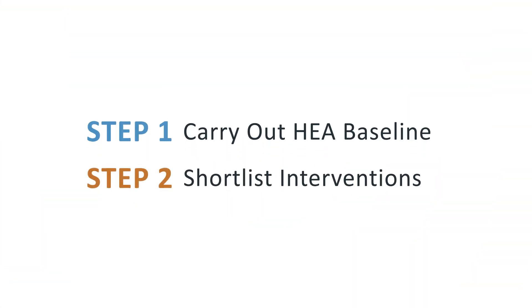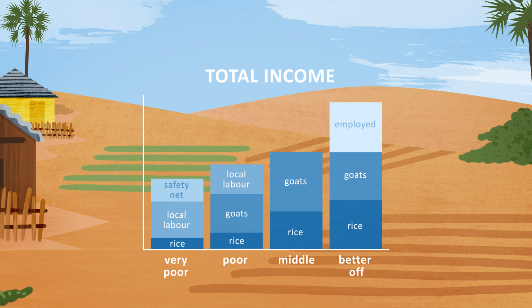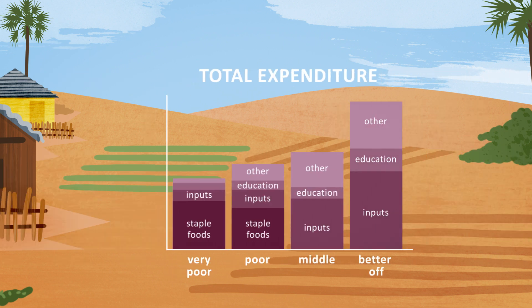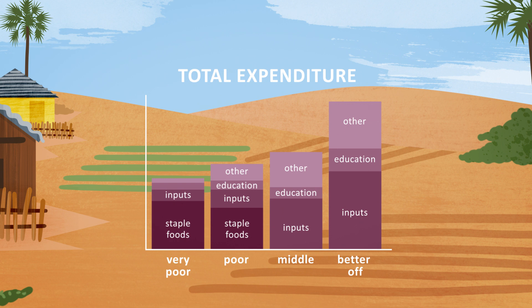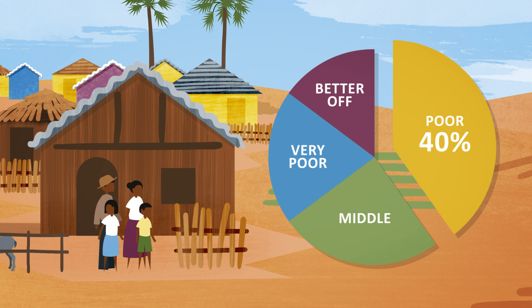The second step is to produce a short list of possible interventions. The baseline shows that rice production and goat sales contribute significantly to the total income of households in three of the four wealth groups. The poorer two groups also rely on doing paid labour. All groups have a range of different expenditures. Note especially that very poor and poor households spend a large proportion of their available cash on staple foods. In this example, the organisation decides it wants to target poor households, which make up 40% of all households in the zone.